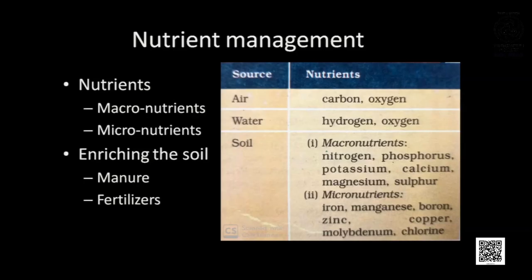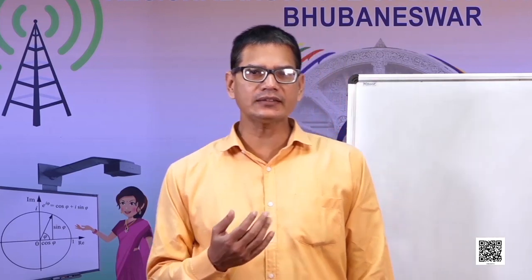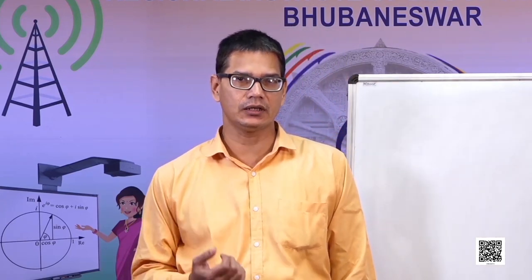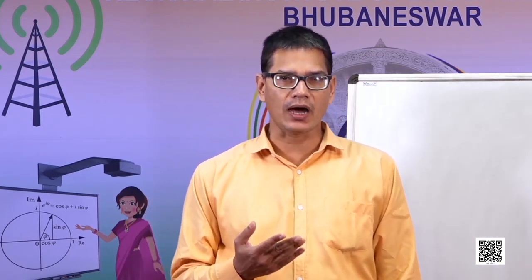Examples of macronutrients are nitrogen, phosphorus, potassium, calcium, magnesium, and sulfur. Examples of micronutrients are iron, manganese, zinc, copper, etc. To enrich the soil with these nutrients, we require manure and fertilizers.